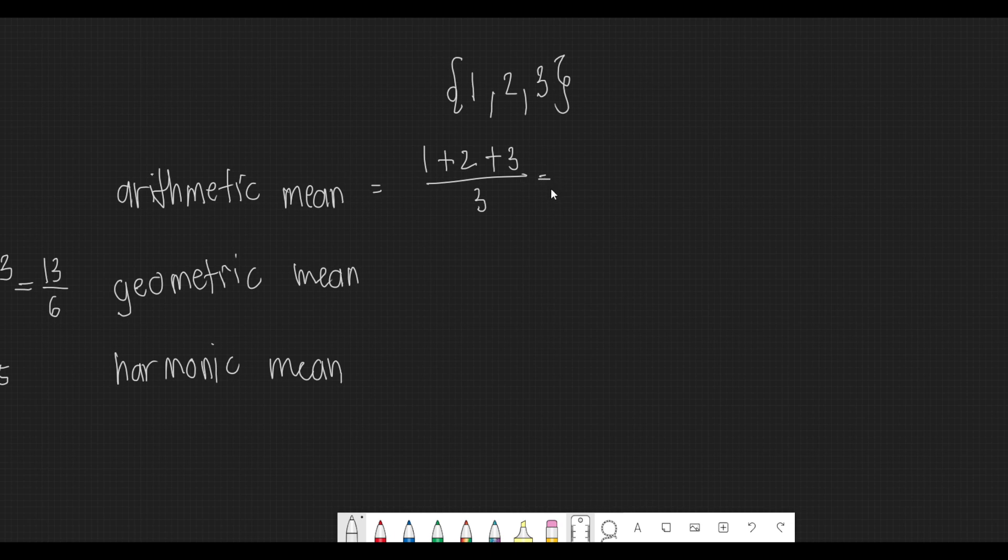So 1 plus 2 is 3, 3 plus 3 is 6, 6 divided by 3 is equal to 2. So this is our arithmetic mean.